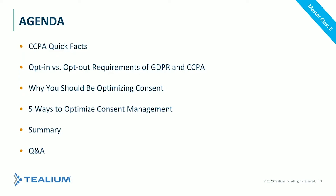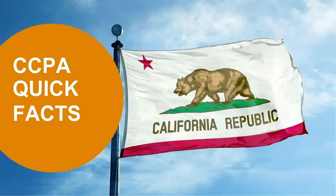Here's our quick agenda: we'll cover CCPA basics and quick facts, opt-in and opt-out requirements for GDPR and CCPA and how they differ, why you should be optimizing consent, and five ways to optimize consent management. We'll finish with a summary and Q&A — that's roughly the run of our 45 minutes today.